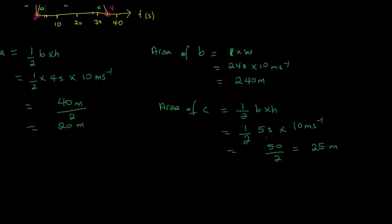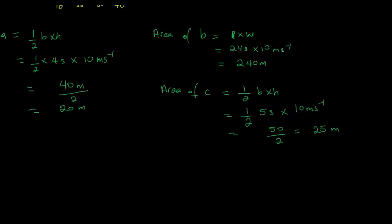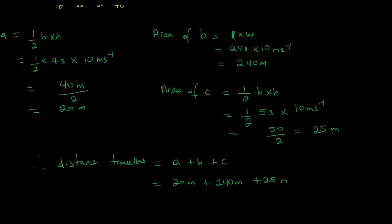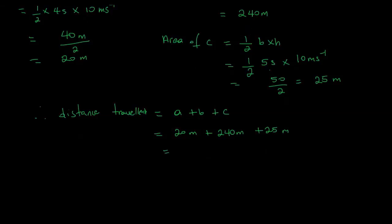Adding them all up, the total distance traveled equals the area of A plus the area of B plus the area of C: 20 meters plus 240 meters plus 25 meters, which works out to be 285 meters.